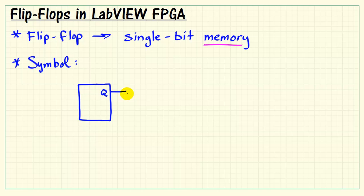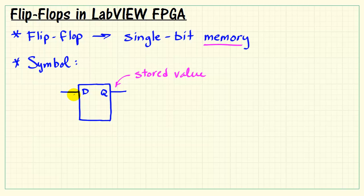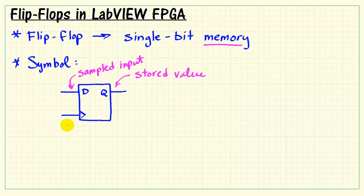Again, it's a memory, so its stored value is available on the output designated Q. We need to have some mechanism by which a new value can be injected into the flip-flop, and that's handled with the D input. The D input will sample whatever is being applied and store that value on the rising edges of the clock waveform. So this input is also referred to as the trigger input.